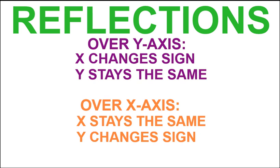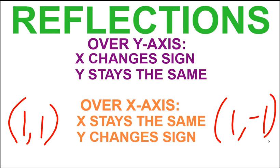Similar idea with the x-axis. X will stay the same and y will change signs. So again, the point (1,1), this time the x stays the same and the y changes signs. So really the way it works is whichever axis you reflect over, that letter stays the same, the other letter changes signs.